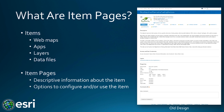Each item in ArcGIS has a page with detailed descriptive information and options to use or configure that item. For example, you could open it, add to favorites, share through social media, add ratings and comments, and see the number of views and downloads. To access item details, you click Details under any item's thumbnail, or from the gallery, hover over the thumbnail and click Details.